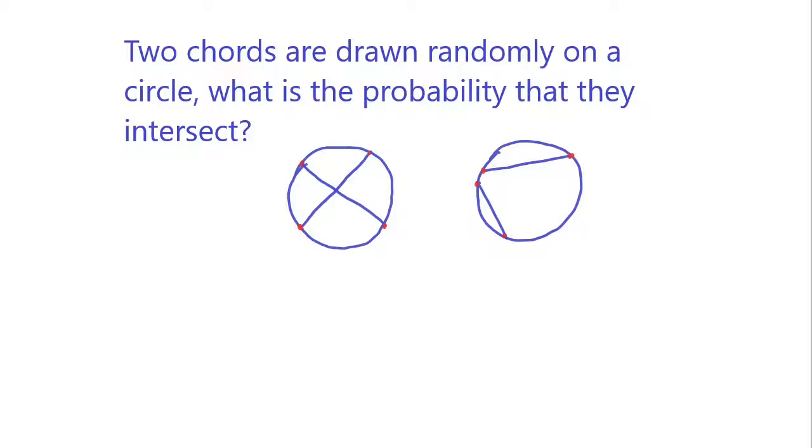Hello folks, today we are going to do a geometry probability problem. Two chords are drawn randomly on a circle. What is the probability that they will intersect? So first of all, what is a chord? A chord is basically two points on the circle and then you connect them with a line segment.